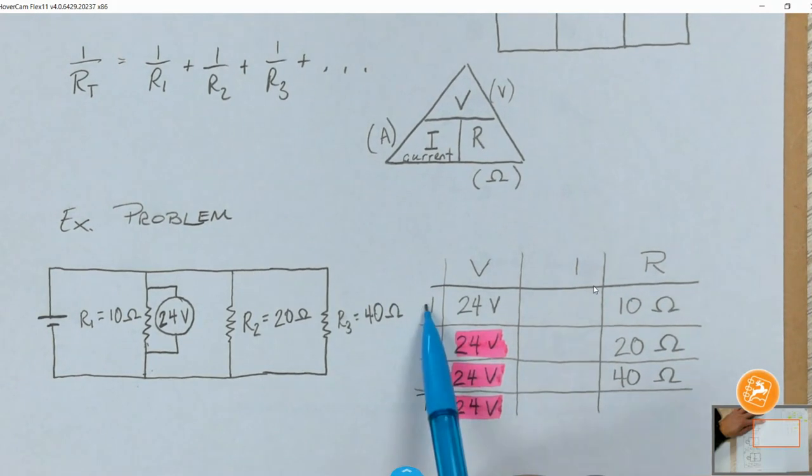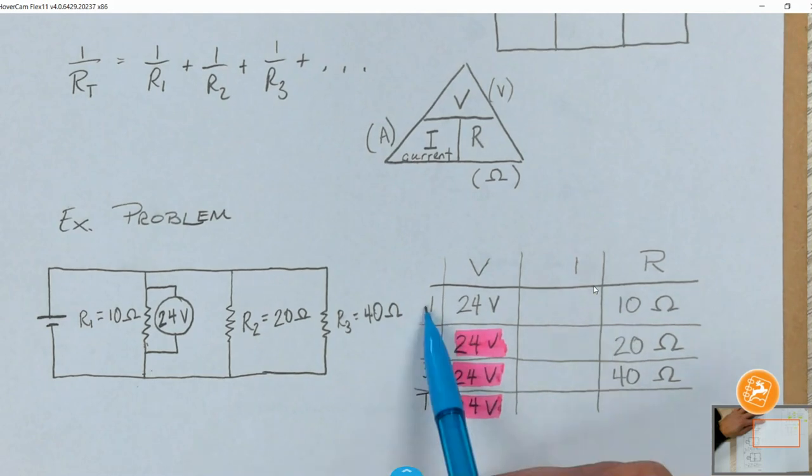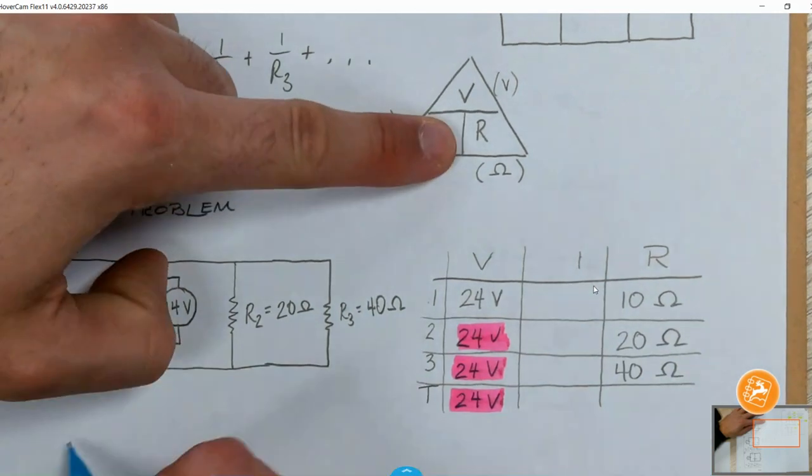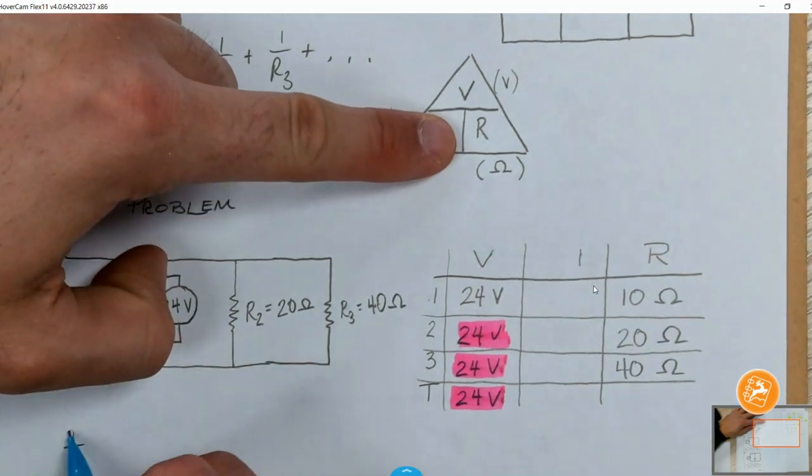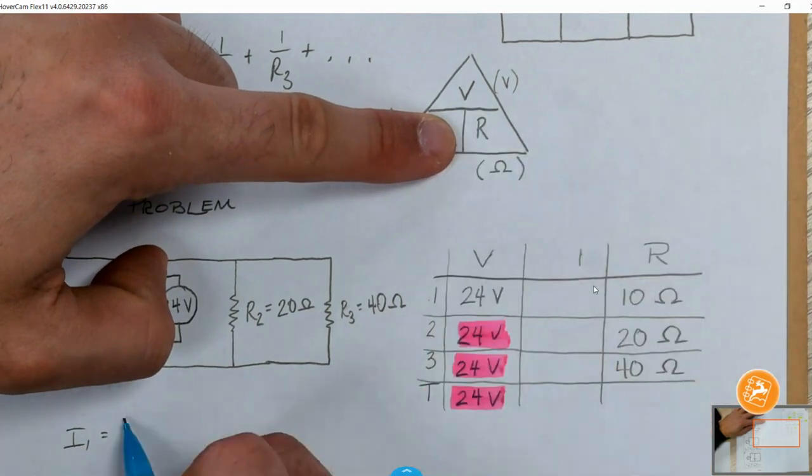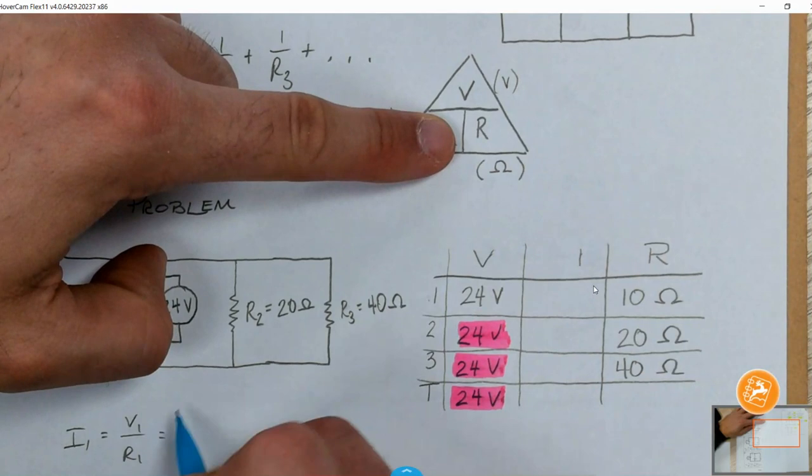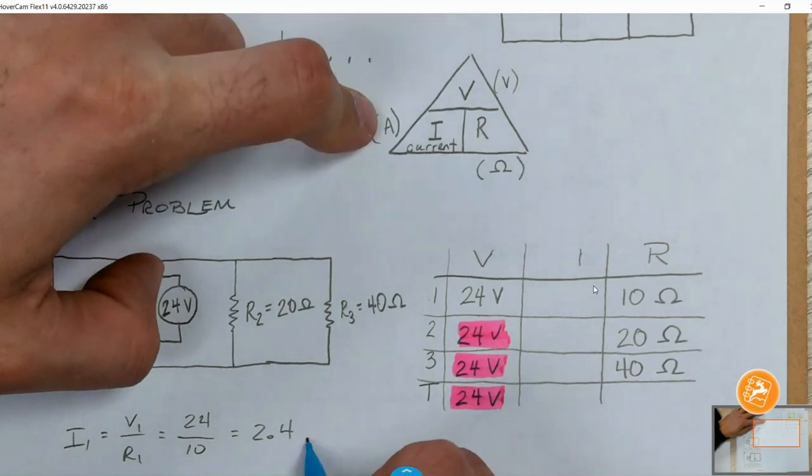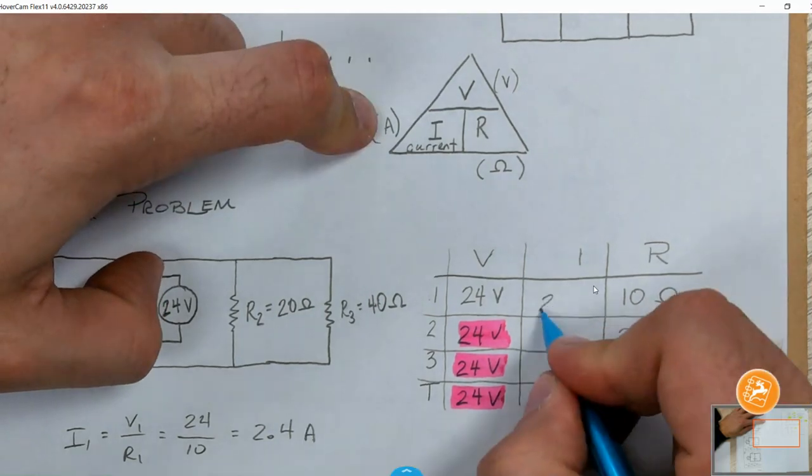So if I want I, this one in particular, it has to go with all the information in the one row. So I1, if I want to solve for I, solve for current, cover that up. I1 will equal V divided by R, but you have to use the subscripts V1 and R1. So 24 over 10, 2.4, the unit for current is the amp. So we have that.